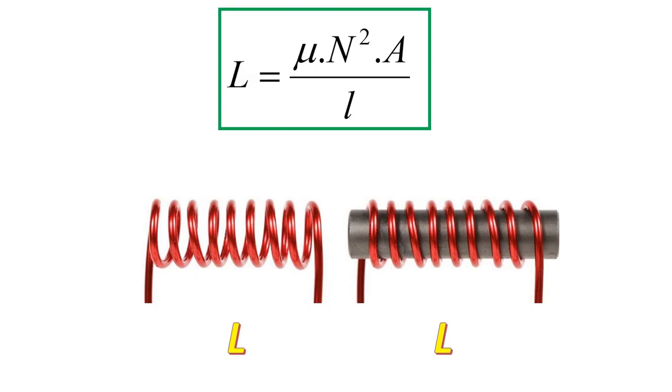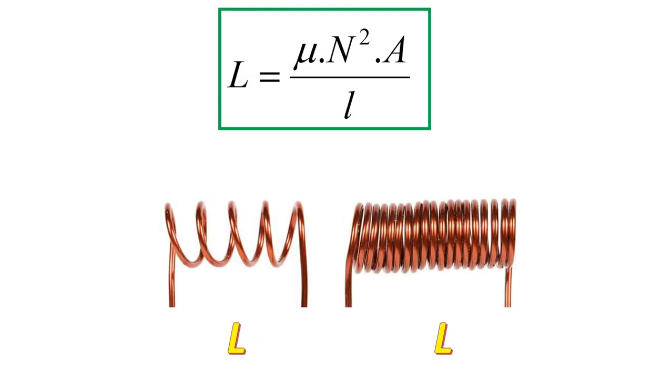First of all, let's look at how the inductance value changes by means of magnetic permeability. As the coil on the left, the inductance value decreases when using air with low magnetic permeability as a core, while the inductance value increases when using iron, which has high magnetic permeability as the core on the right coil.